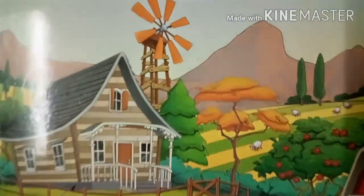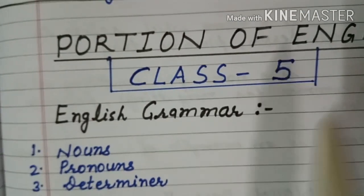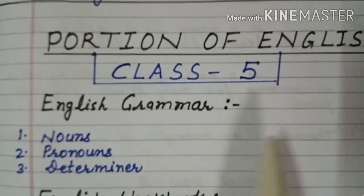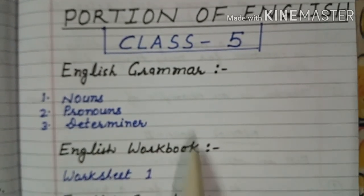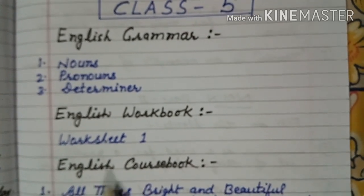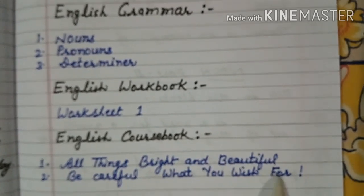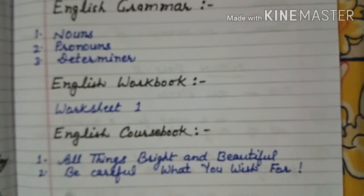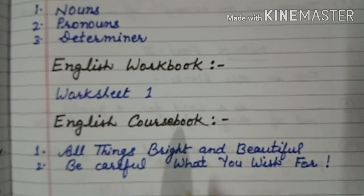First of all, I would like to tell you your English portion for the unit test. In English grammar: nouns, pronouns, and determiners. In English workbook: Worksheet 1. And from the English course book, two chapters — first, 'All Things Bright and Beautiful', and second, 'Be Careful What You Wish For'. So be serious and listen to all things carefully.